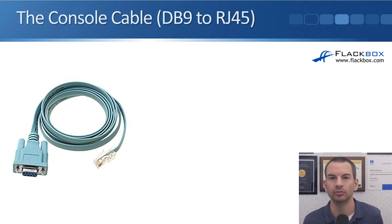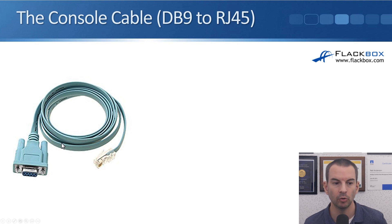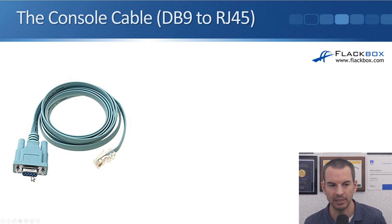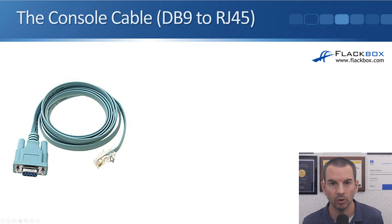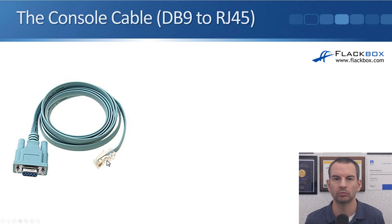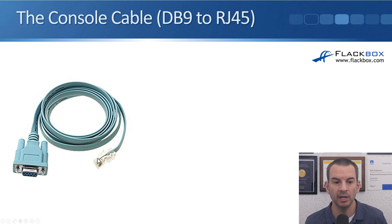You use a console cable to do it, which comes in the box with your device. The console cable has a serial DB9 connector on one end — it's called DB9 because nine pins go in there — and on the other side it's got an RJ45 connector, similar to what you would see on a standard Ethernet cable. But this is absolutely not an Ethernet cable. It's not using Ethernet and it doesn't require IP addresses; it gives you low-level direct access to the command line.